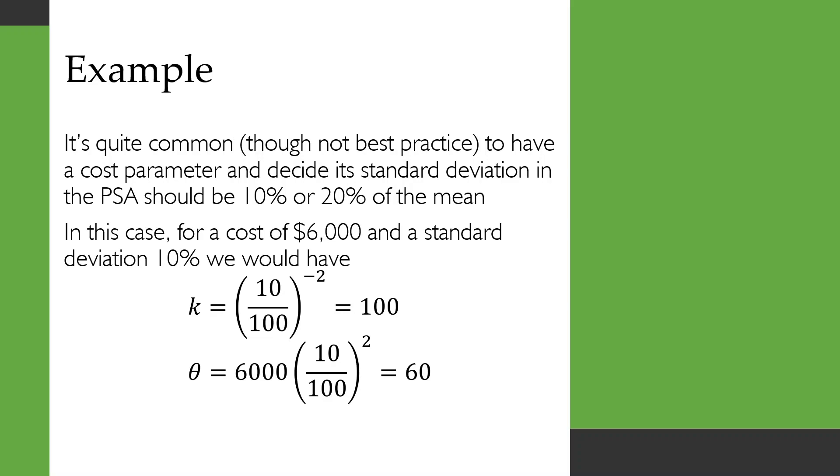So to take an example where we have a cost of six thousand dollars and a standard deviation of 10 percent, we would calculate k to be equal to 100 like so, and we would calculate theta to be equal to 60. And you should be able to check that you've got the right distribution if you multiply k and theta you should get back the mean that you were aiming to have.